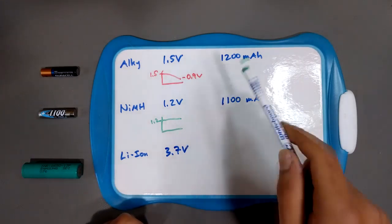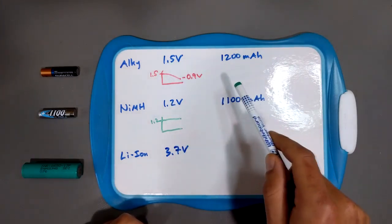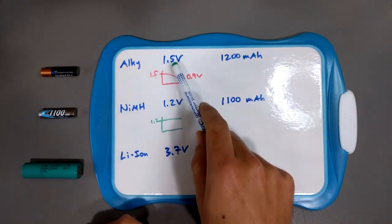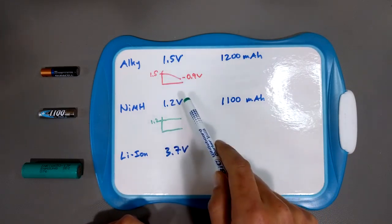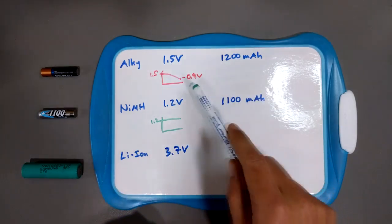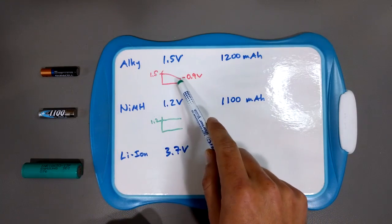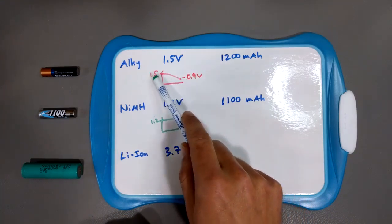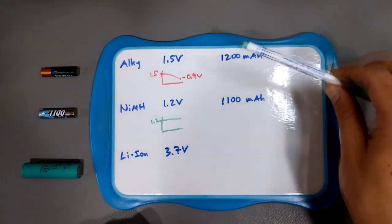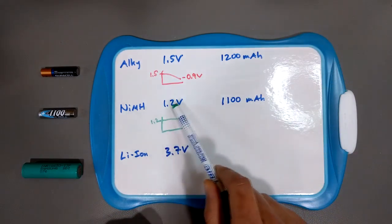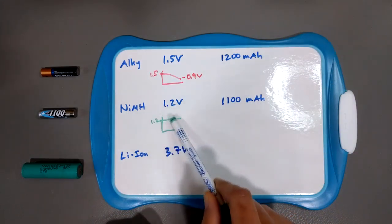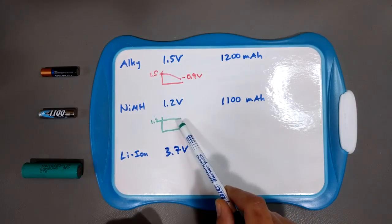Now, nickel metal hydrides, in contrast, pretty much stay, they start at 1.2 volts when they're fully charged, and for the most part, they stay fairly constant until all the current sucked out of them. Well, why does that matter? Well, again, power equals voltage times current.